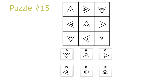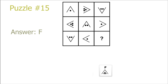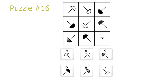Puzzle 15. Exact same again. Instead we have the triangle's orientation in the top left to the bottom right corner, which leaves a triangle pointing upwards. And then we have a repetition every 3 diagonals going from top left to bottom right, which leaves F as the correct answer.